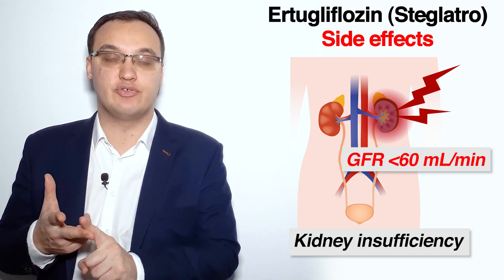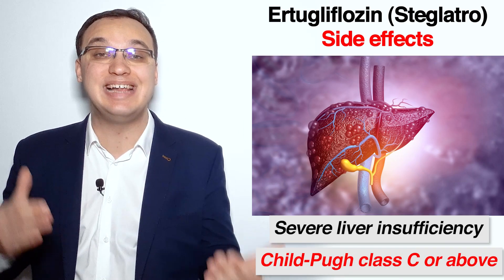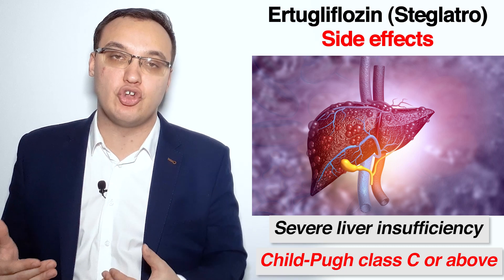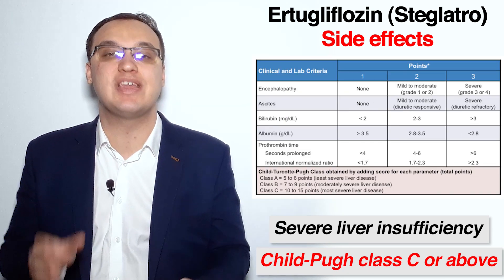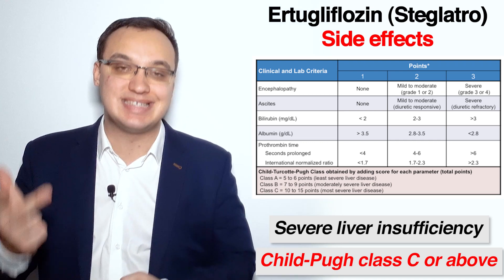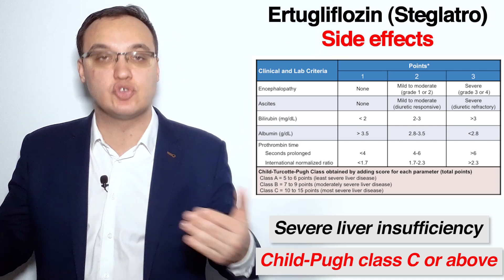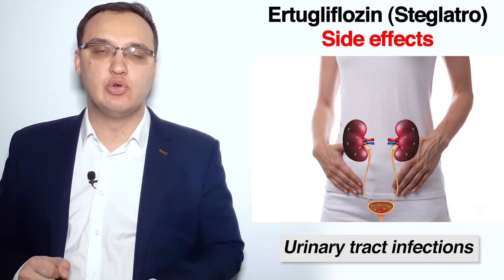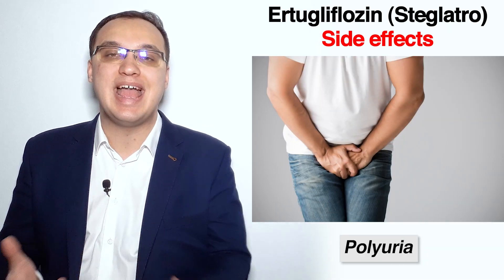Other contraindications include severe liver insufficiency, which typically means Child-Pugh class C or above. This classification groups liver insufficiency into severity levels A, B, C, and D. If the Child-Pugh class is C or D, Steglatro must be stopped. Additional contraindications include urogenital tract infections and polyuria, which means an increased amount of urine output.